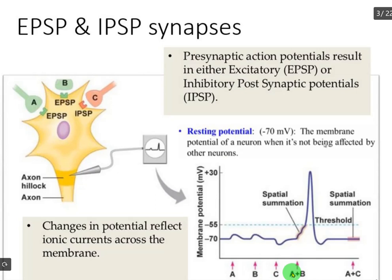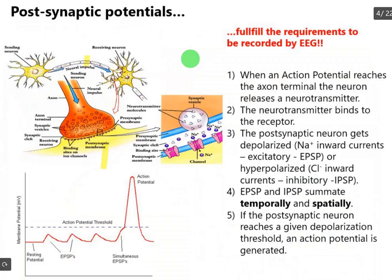When two neurons fired together, and we have post-synaptic potentials that sum temporally and spatially, post-synaptic potentials represent the origin of EEG that is recorded from the skull. Let me explain the entire process point by point. Here we have a sending neuron and a receiving neuron. We have the synapse, synaptic cleft, and axon. An action potential is traveling from the sending neuron to the receiving one, and we are talking about the depolarization of the post-synaptic membrane.